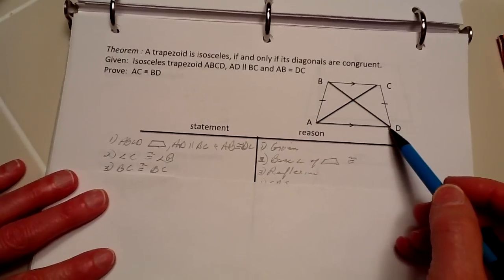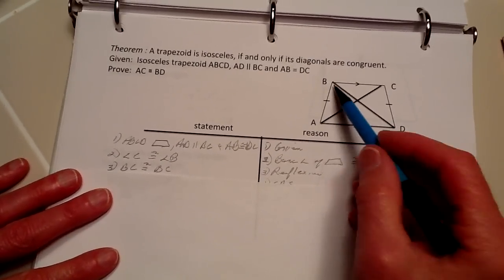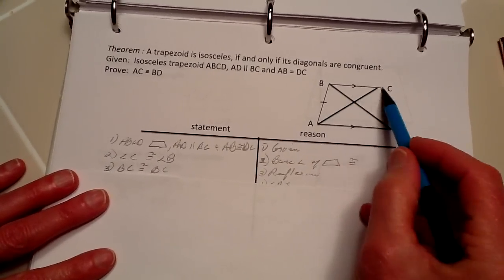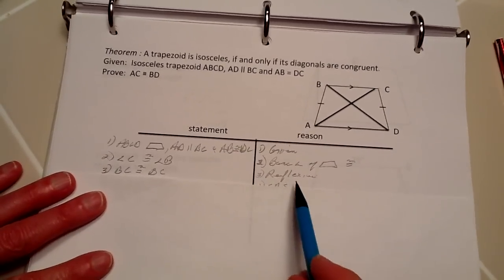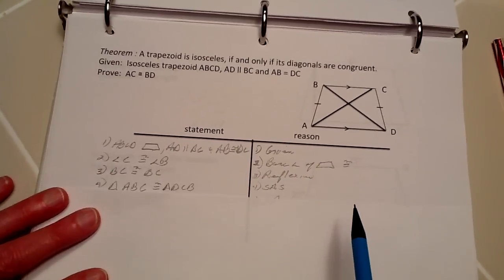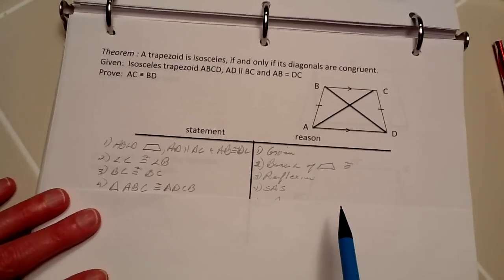Next, we know that BC is congruent to itself because of the reflexive property.